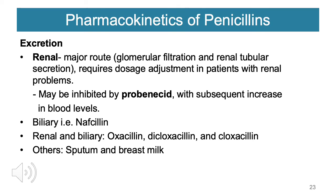Renal excretion is the major route for penicillins via glomerular filtration and renal tubular secretion, requiring dose adjustment in patients with renal failure. This drug may be inhibited by probenecid, with a subsequent increase in blood levels — probenecid decreases renal excretion of penicillin, a concept utilized in patients requiring prolonged penicillin treatment. Nafcillin demonstrates biliary excretion. Oxacillin and dicloxacillin are both renally and biliarily cleared. Penicillins are also expressed in sputum and breast milk.